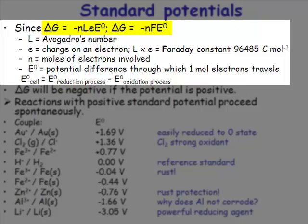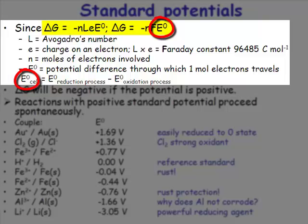Note the minus sign in the formula. In order to have a negative free energy change — for a process to occur spontaneously — the value of E°cell has to be positive.